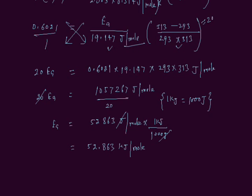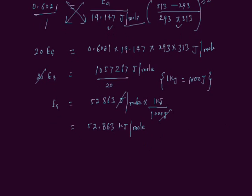You can round off these figures. 3 is smaller than 5. That is why this number remains the same. The number we have is 52.86 kJ per mole.